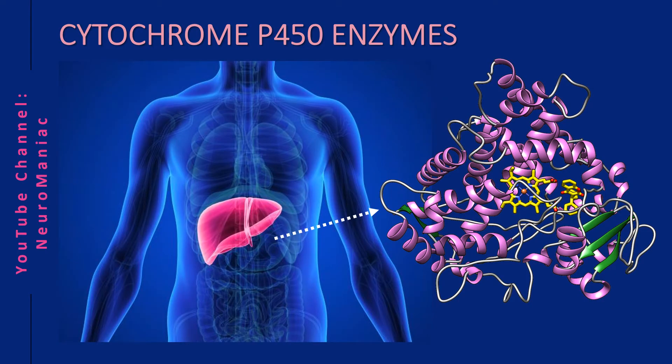What on earth is CYP450? Well, they're a family of membrane-bound heme proteins mainly found in the endoplasmic reticulum and mitochondria of liver cells. Their function is to metabolize xenobiotics — in other words, metabolize foreign chemicals or drugs so they are ready for excretion.